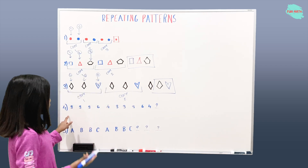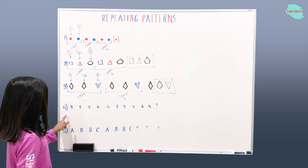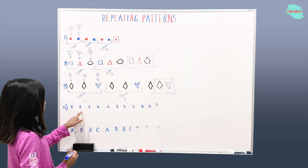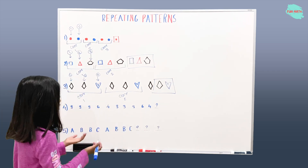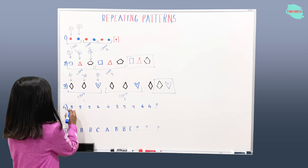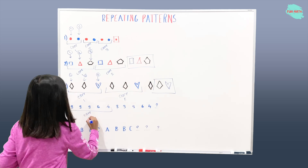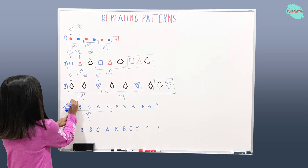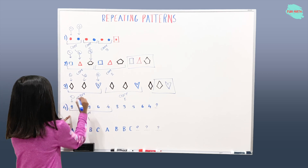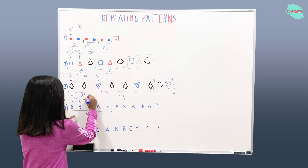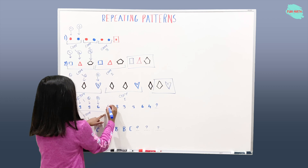Let's move on to example four. The core for example four — there's three, three, three, six, four, three, three, three, six, four. So the core is three, three, three, six, four — that's the first core. Step one is three, step two is three, step three is three, step four is six, and step five is four. So there are five steps.